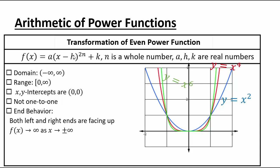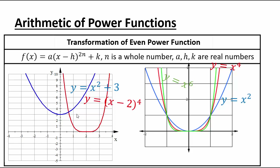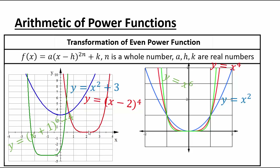In other words, h determines horizontal shifts and k determines vertical shifts. For example, x squared plus 3 is the parabola x squared shifted up 3. x minus 2 to the 4th power is the same graph as x to the 4th but shifted 2 to the right. x plus 1 to the 6th power minus 4: the x plus 1 shifts it left 1, and the minus 4 shifts the graph down 4.